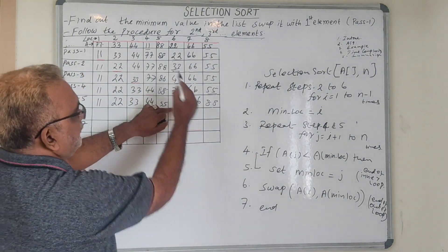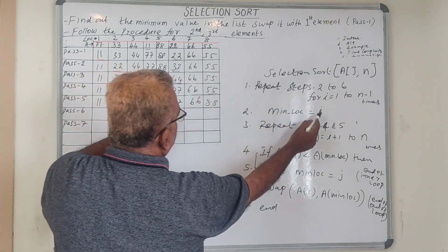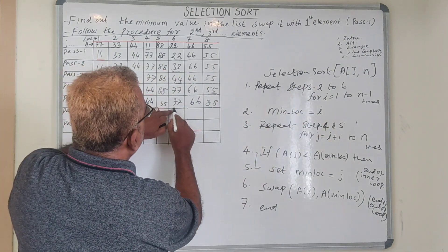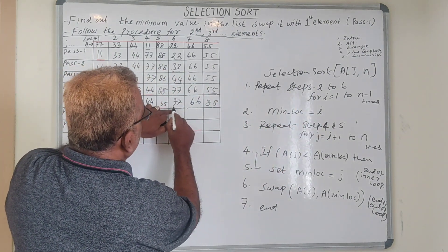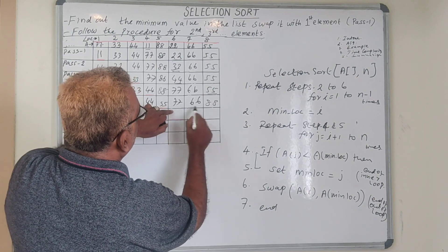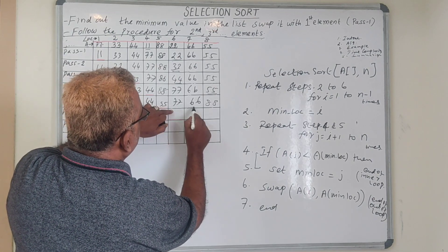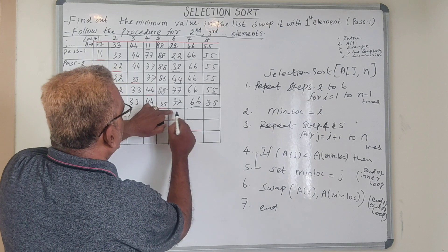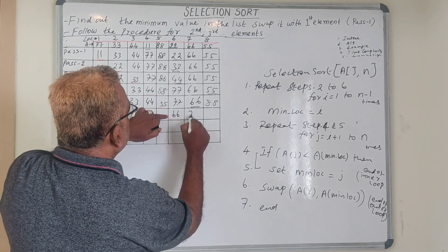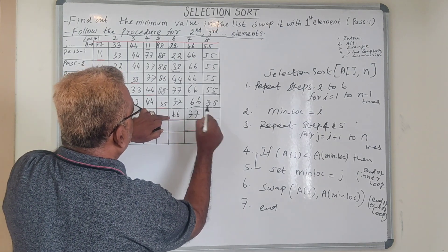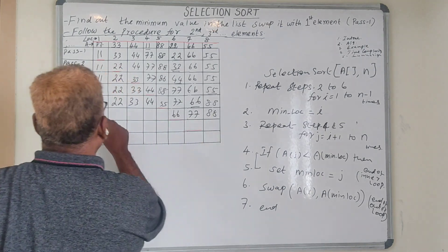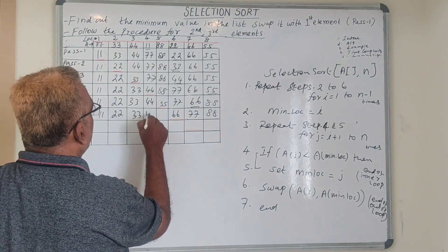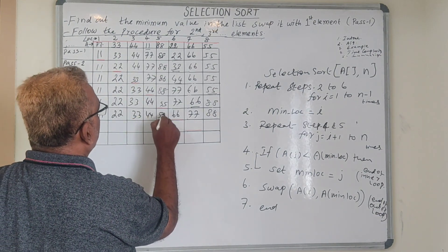Now i equals 6. We compare from here, and 66 is the minimum value. So 66 comes here and 77 goes there. The remaining values are as they are: 22, 33, 44, 55.